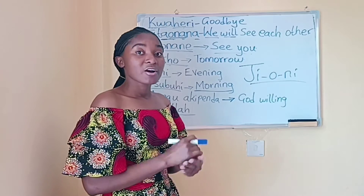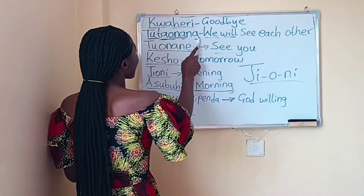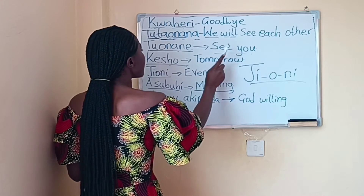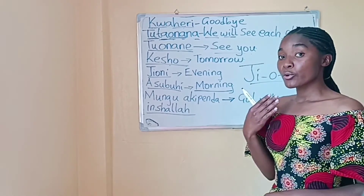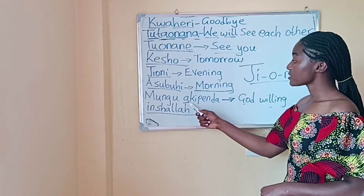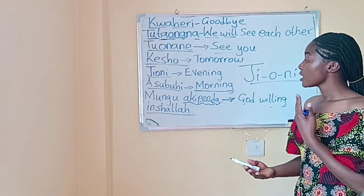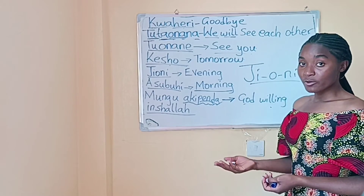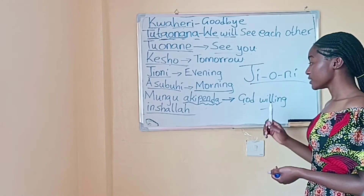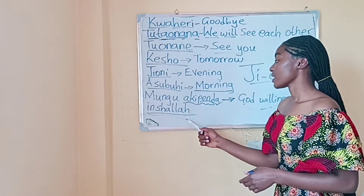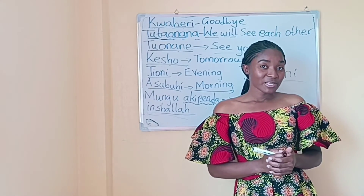Let me go through all the phrases again. Kuahiri means goodbye. Tutaonana means we will see each other. Tuonane means see you. Kesho is tomorrow. Jioni is evening. Asubuhi is morning. And mungu akipenda means God willing — penda means like or love in Swahili, so 'if God likes,' which in English is just 'God willing.' Or you can say inshallah. That's how you say goodbye in Swahili.